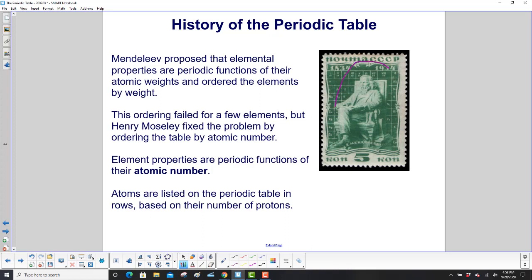Mendeleev, here's a picture of him on a postage stamp, proposed that elemental properties are periodic functions of their atomic weights. And he ordered the elements by their weight. This ordering failed for a few elements, but Henry Moseley fixed the problem by ordering the table by atomic number.